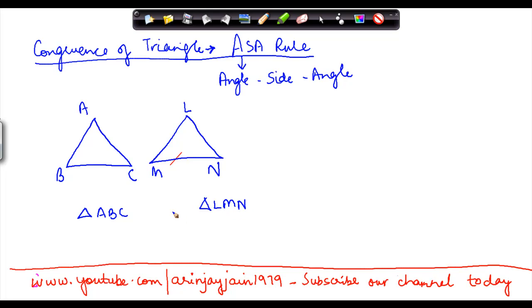Now these two triangles will be congruent when two corresponding angles... so let's say you have angle A as angle 1, angle B as angle 2, you have angle L as angle 1, you have angle M as angle 2.